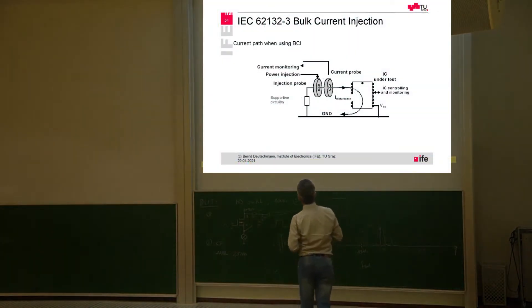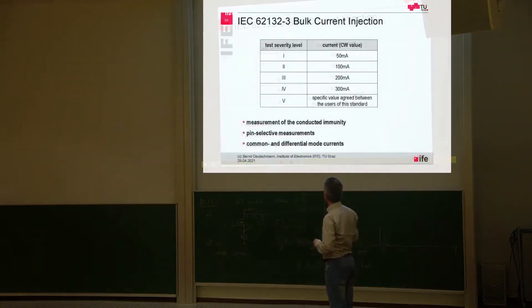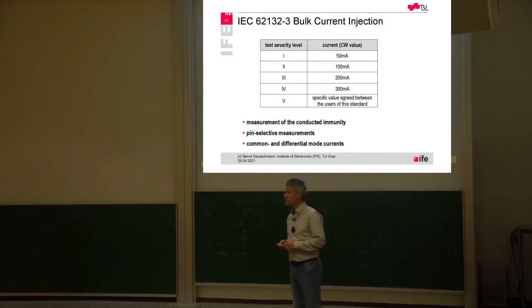And in the standard there are also some test severity levels defined, so level one means 50 milliamp continuous wave current, then two is 100 milliamp and so on.